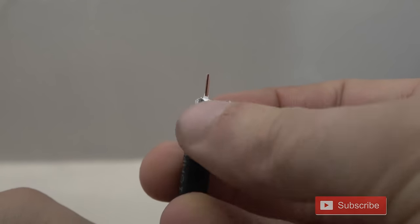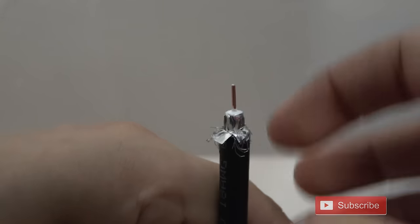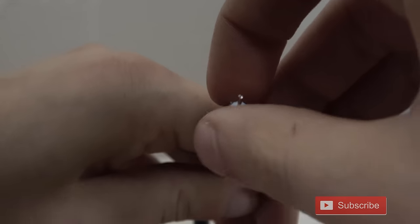You'll then want to peel back the braided shield. If you're using a thick RG6 quad shield cable, there may be an additional outer foil layer that you need to pull back as well.